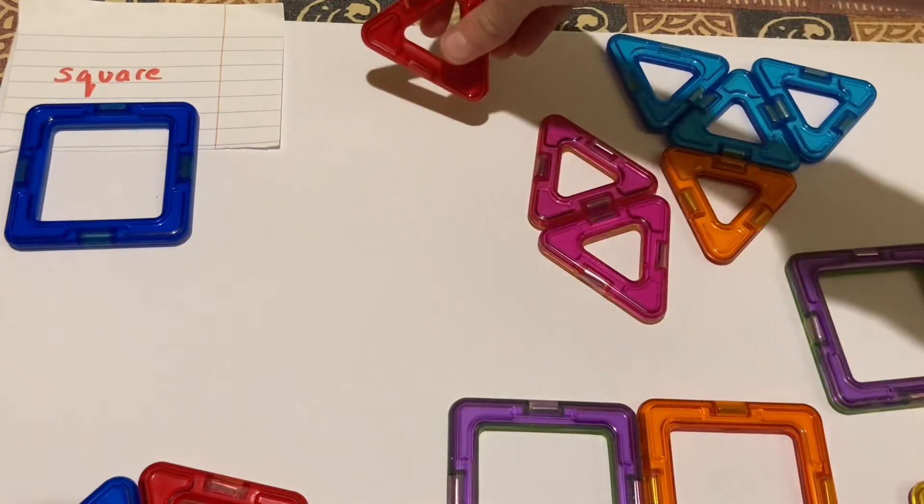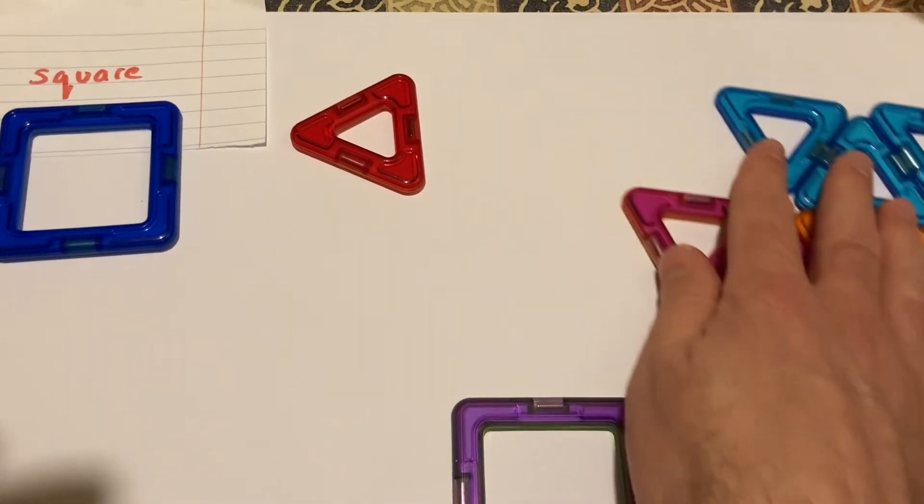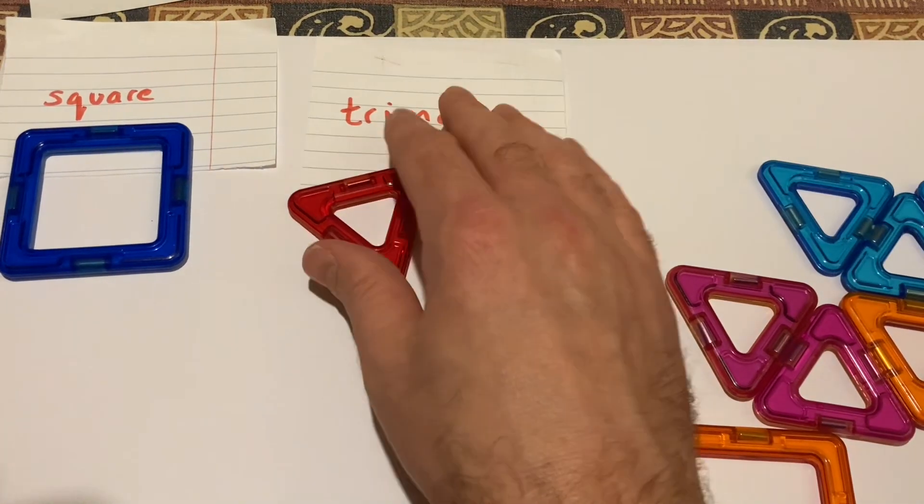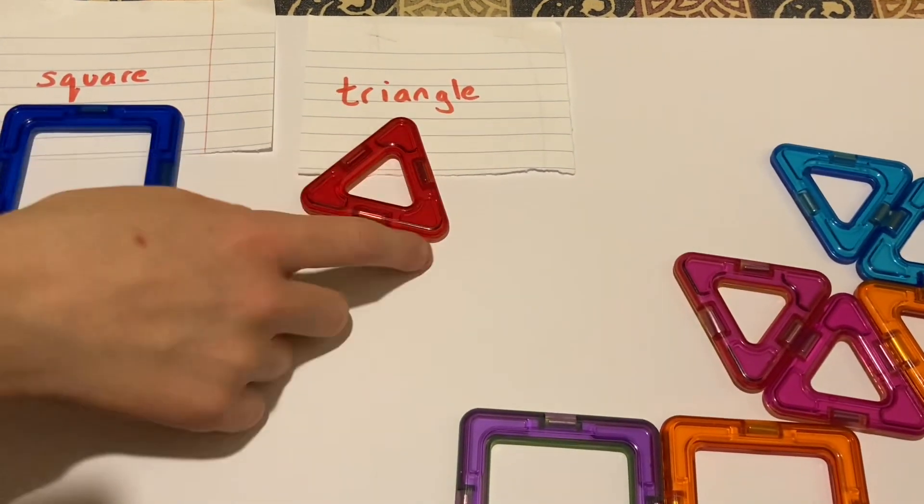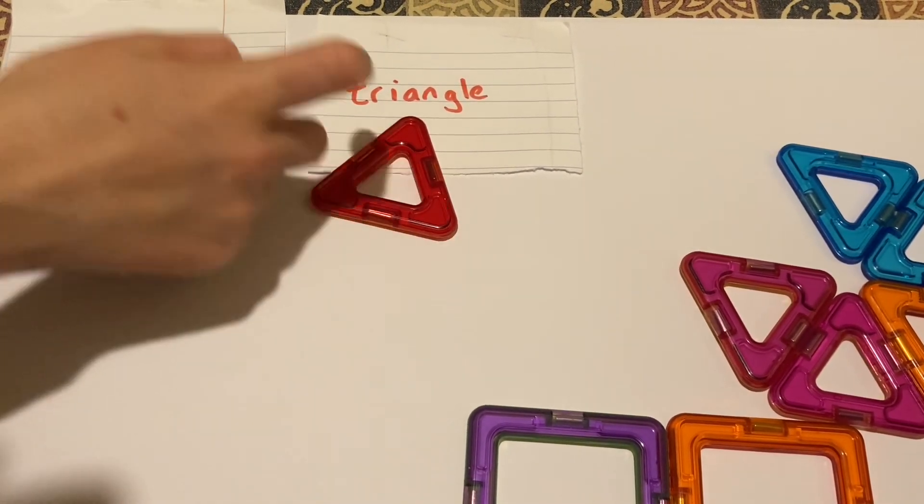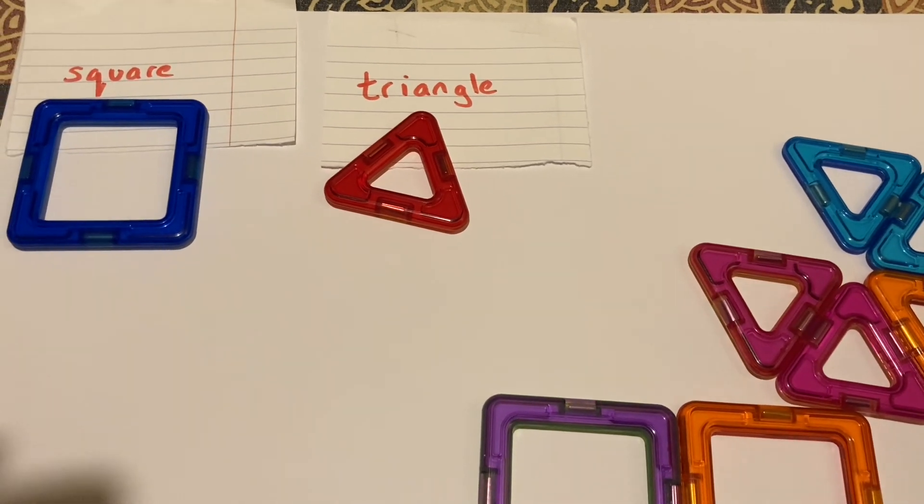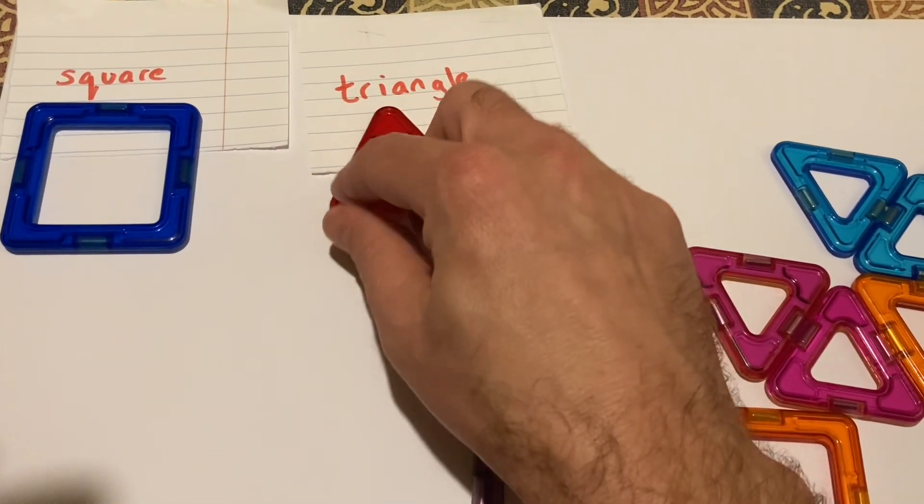What's the next shape? A triangle. And what do we know about a triangle? There are three equal angles and three equal sides. This is an equilateral triangle where it's three equal sides. We could have triangles of different angles.